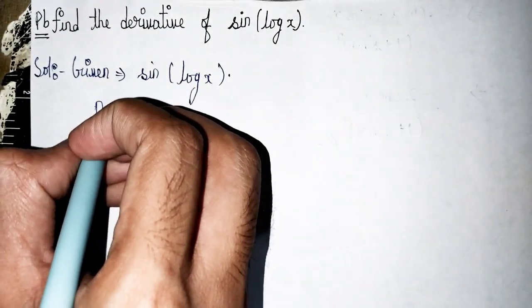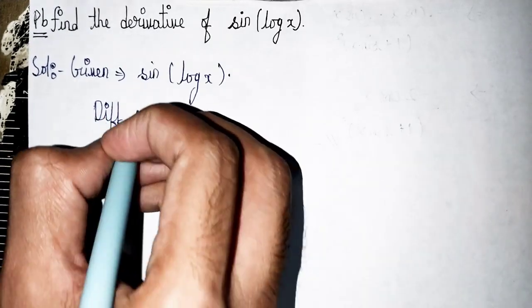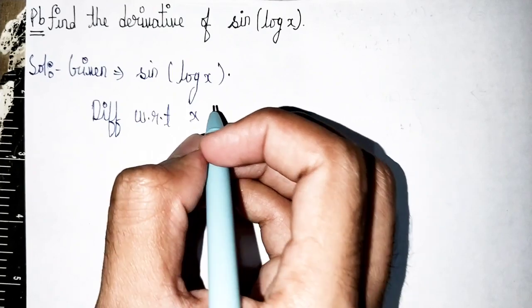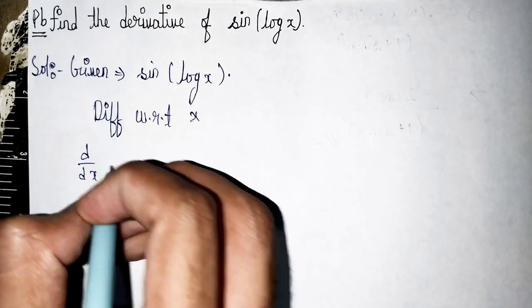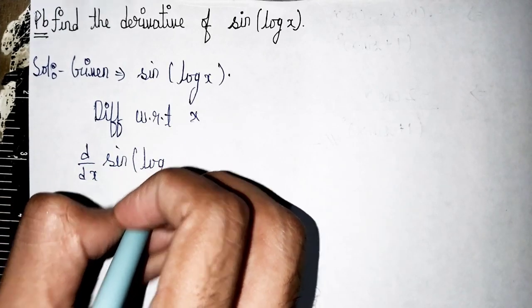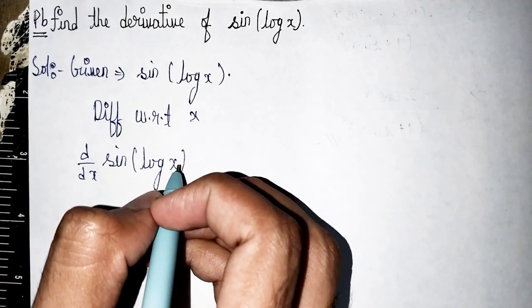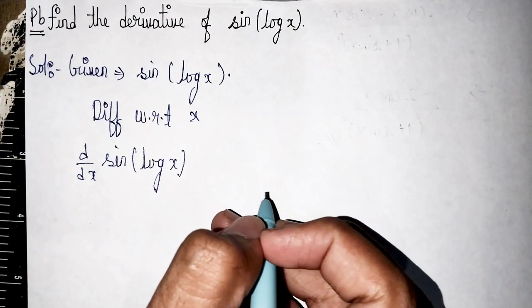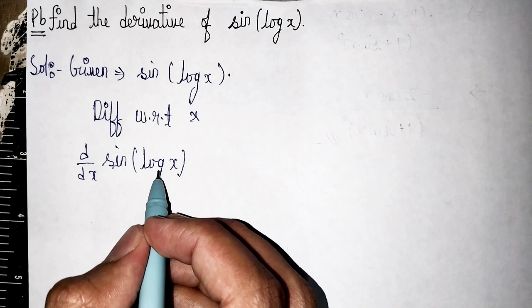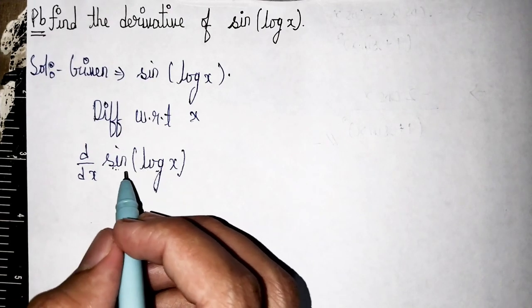Now we differentiate with respect to x, so we write d/dx of sin(log x). Remember, we have to do differentiation twice here—once for sine and once for log—because we have both sine and log in the function.